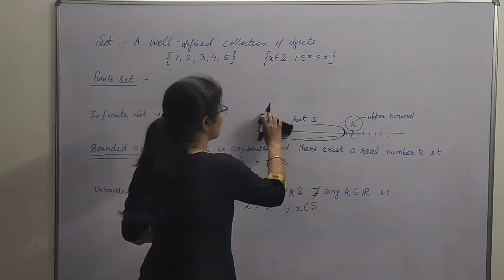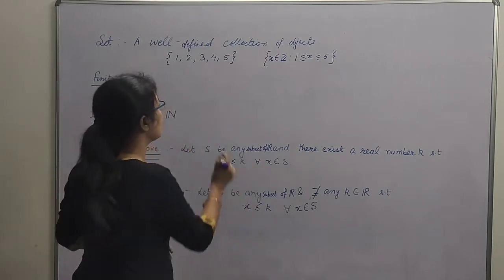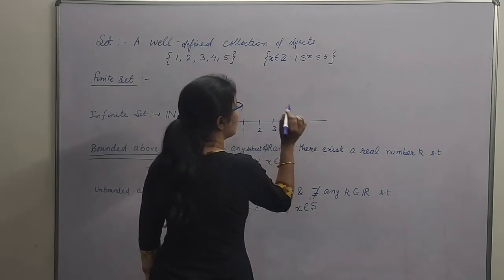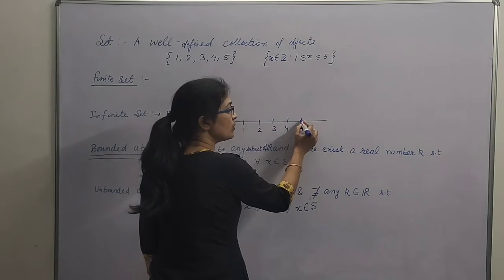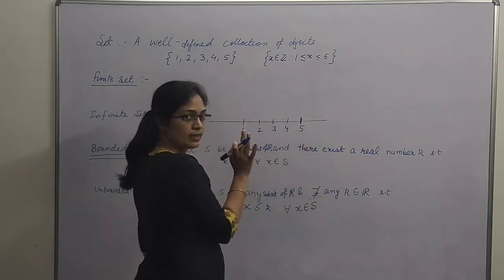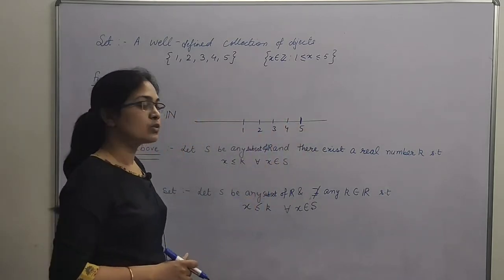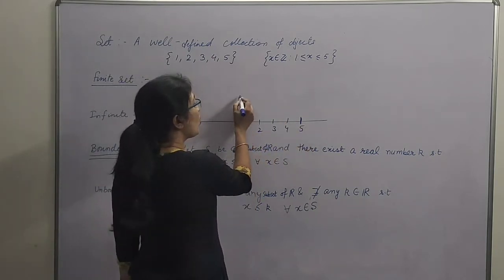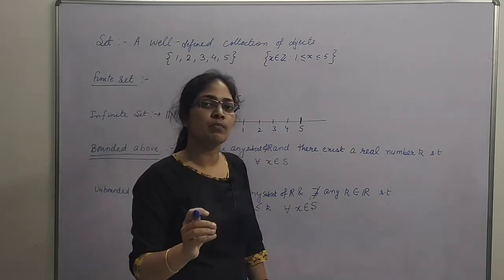Let's take an example. Humne abhi ye set liya: {1, 2, 3, 4, 5}. Agar mein isko number line pe plot karoon, toh humari elements kaunse hain? 1, 2, 3, 4, 5. Now, all these elements are less than or equal to 5. So it means 5 will act as an upper bound for this set, and this set is bounded above by 5. So, agar koi bhi finite set lein, that set is always bounded.